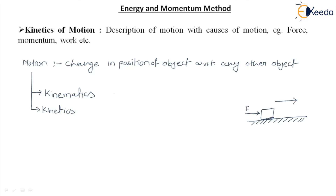The main cause of motion is force. If we apply force on any object, that particular object will move under suitable conditions. But in kinematics we don't consider causes of motion. The main causes of motion we consider are force, energy, momentum, and work.